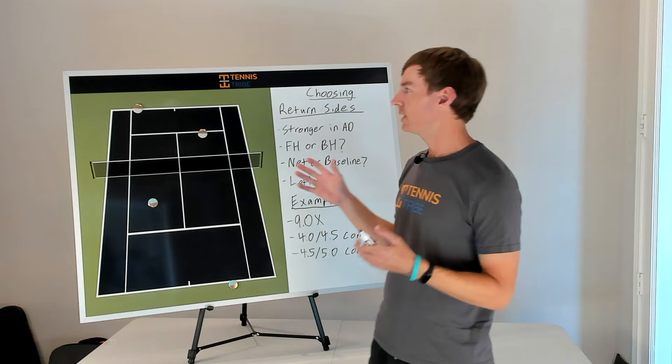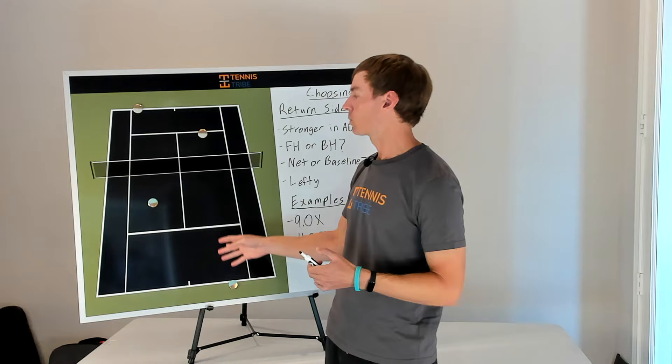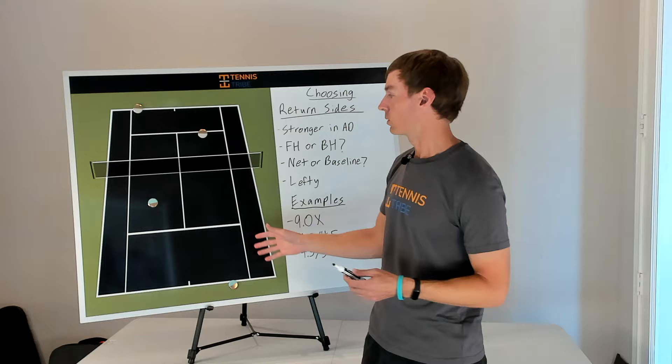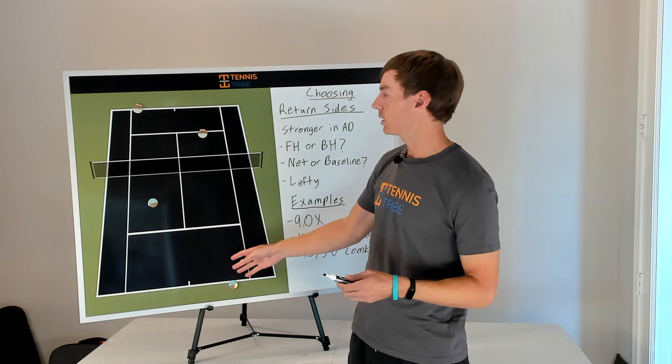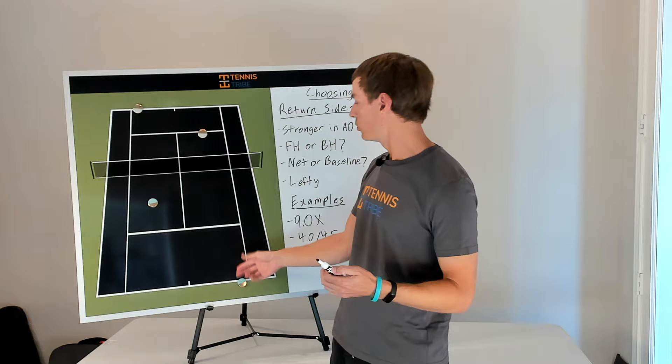And the reason that I explain why this is not true is because the deuce court player gets more total points. On any given game, if you're playing with ad, if it ends up going to deuce, both players are going to get the same amount of returns. If the game is 40-30 or 30-40, both players are going to get the same amount of returns. If it's 40-love or love 40, both players are going to get the same amount of returns because it ends in the ad court no matter what. But on 15-40 and 40-15 games, which aren't the majority of games but they do happen in a typical two out of three set match, the deuce court player is going to get three returns and the ad court player is only going to get two.